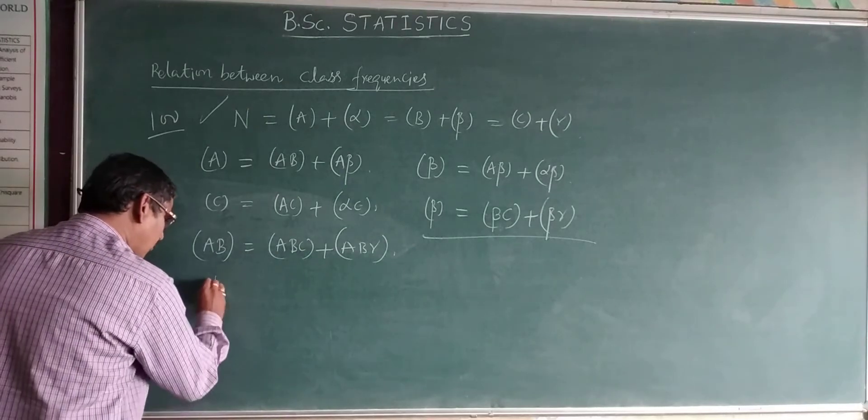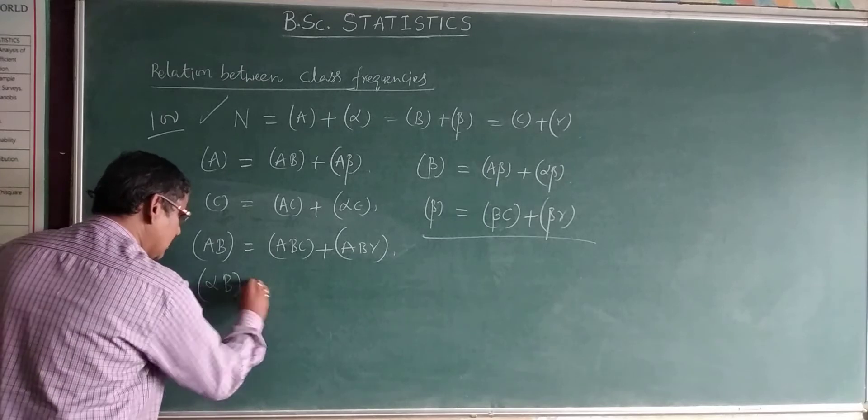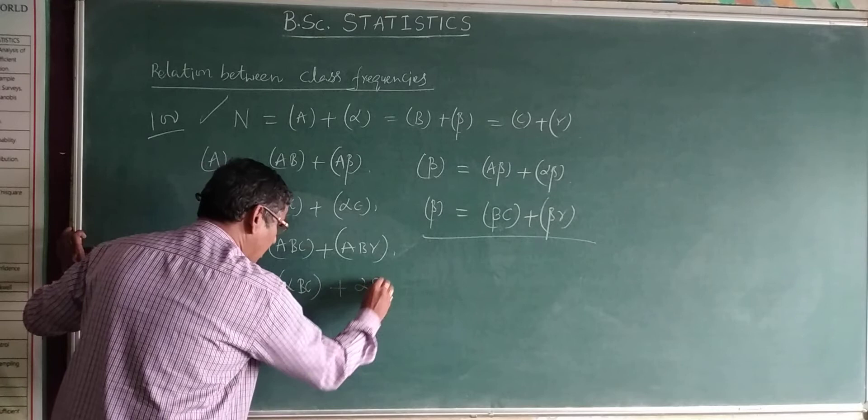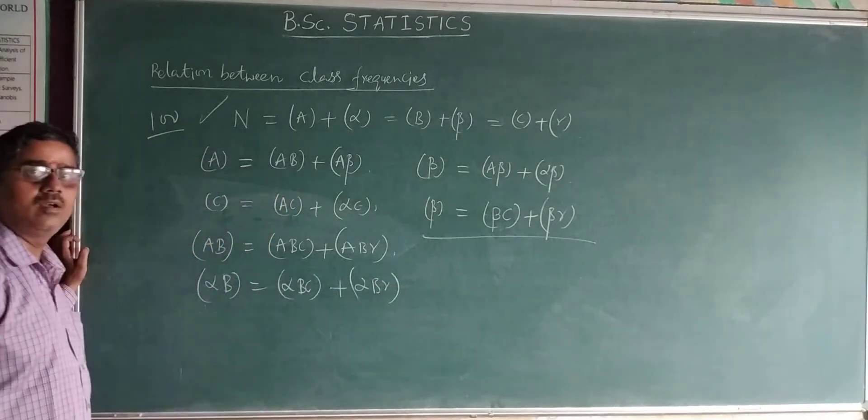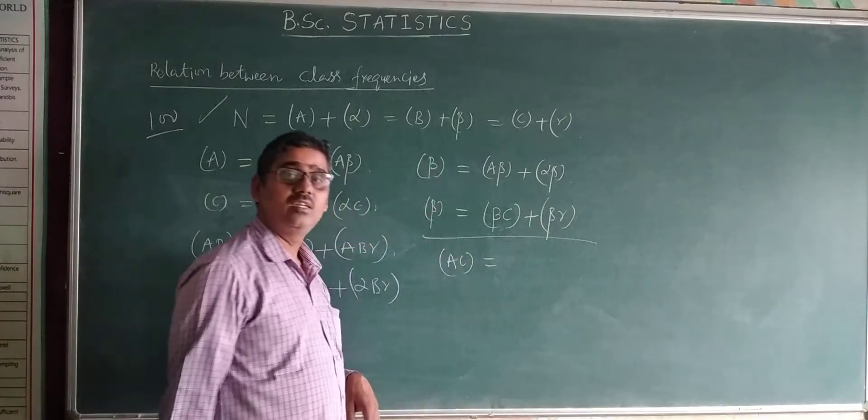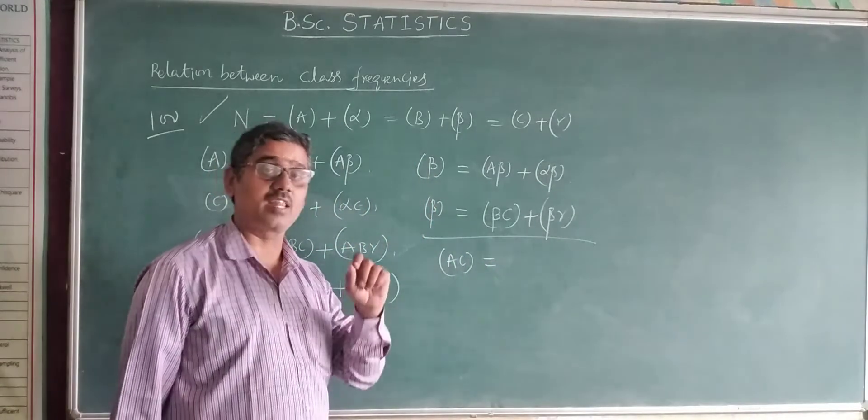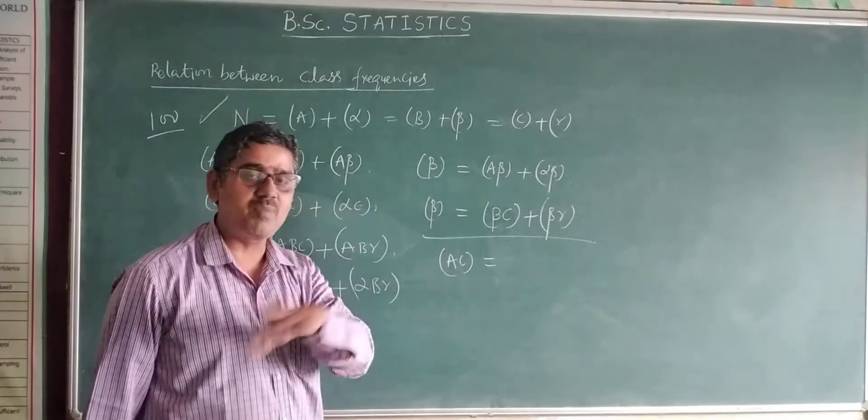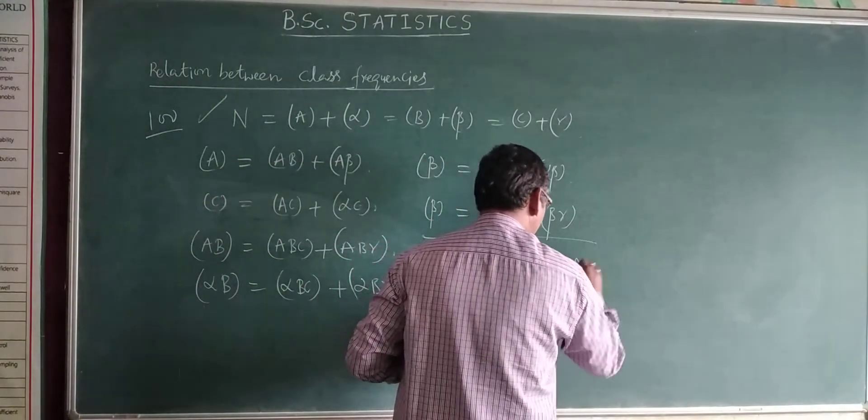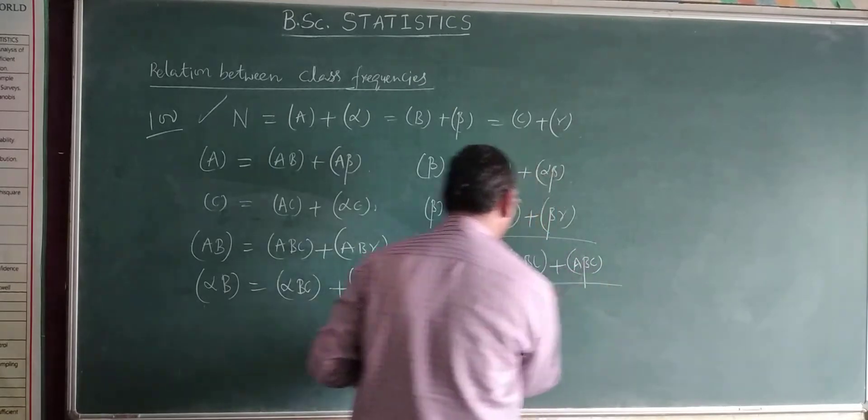Similarly, for example, alpha BC. This also can be written: alpha BC plus alpha B gamma. For example, you consider AC. How can we express AC with the integral attribute B, B and beta. That is ABC plus A beta C. Do you understand the formula?